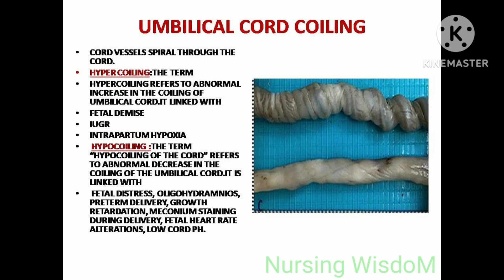Umbilical cord coiling: cord vessels spiral through the cord. Hypercoiling refers to abnormal increases in the coiling of the umbilical cord; it is linked with fetal demise, IUGR, and intrapartum hypoxia. Hypocoiling refers to abnormal decrease in the coiling of the umbilical cord; it is linked with fetal distress, oligohydramnios, preterm delivery, growth retardation, meconium staining during delivery, fetal heart rate alteration, and low cord pH.